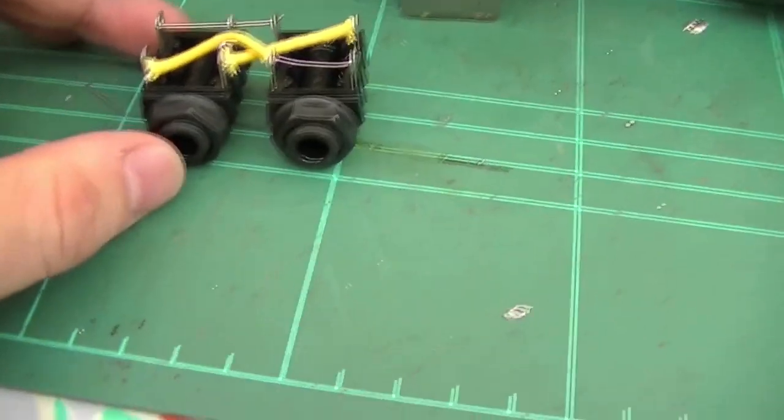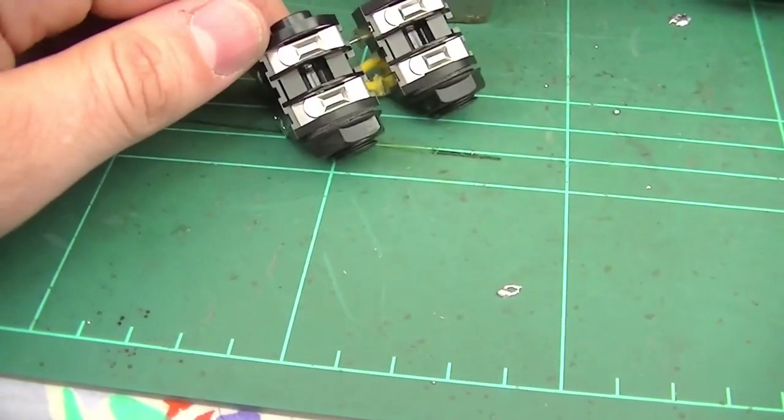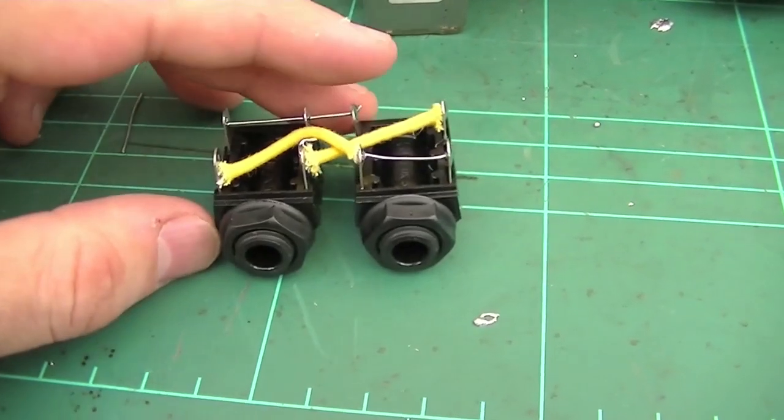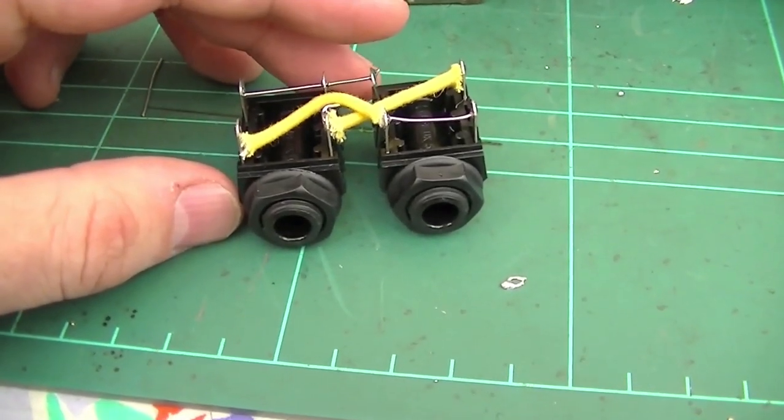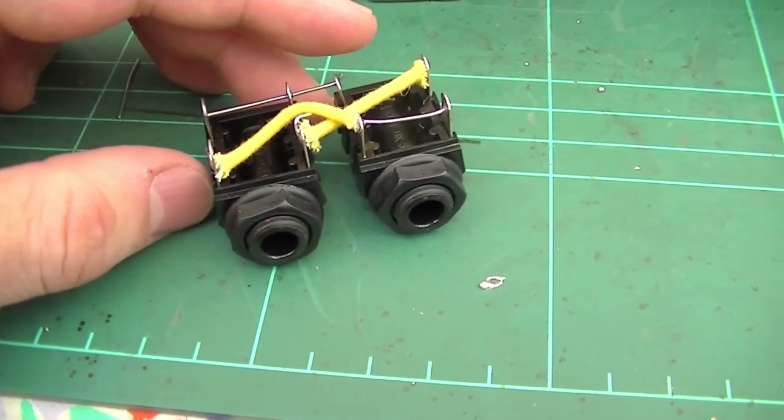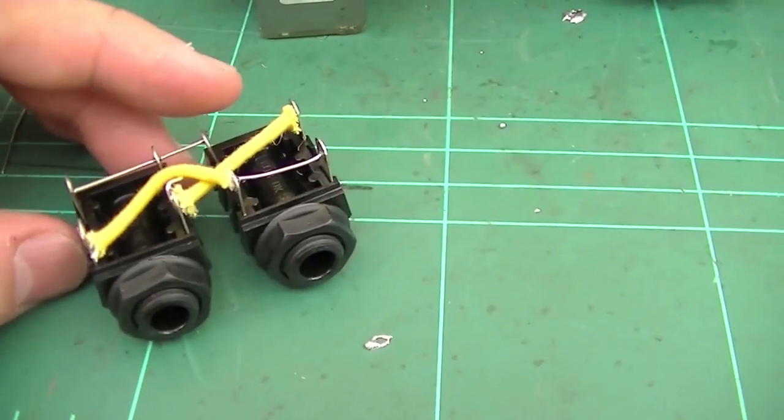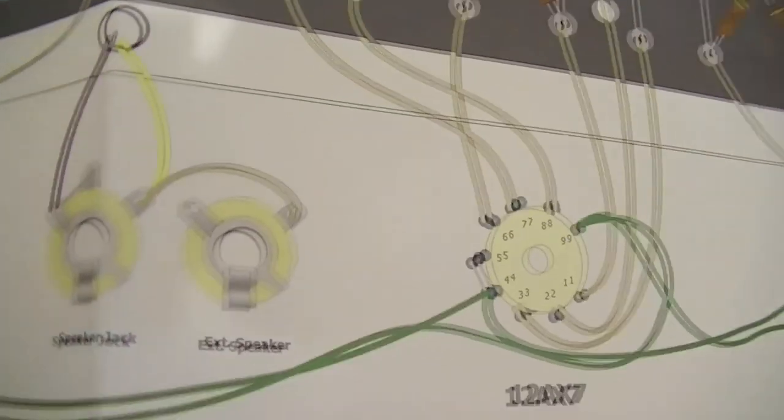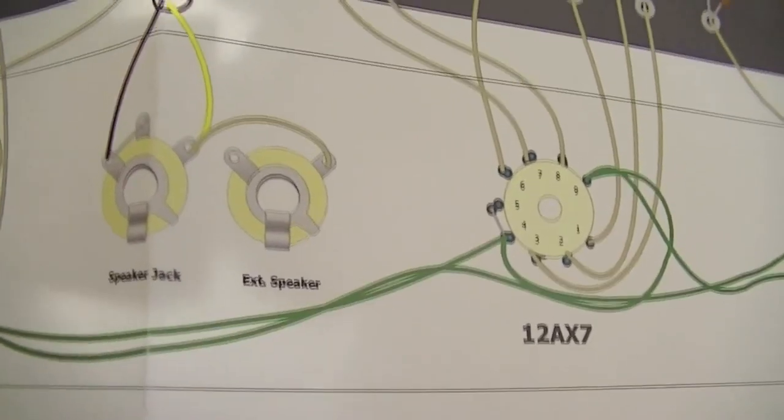One thing I neglected to mention in the last video, I've got these little Cliff jacks here which are for the speaker outputs. I wired them up high-watt style, so if there's no speaker connected it's short circuit, and regardless of which one you plug the speaker into it'll open it up.